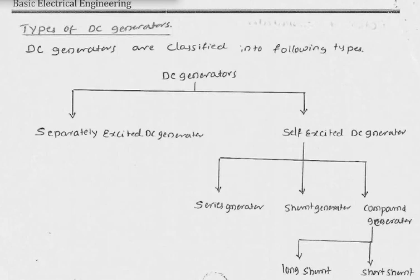There are different types of generators based on how the excitation of the generator is done. For a DC generator, we use the field winding. The field winding is used to create a magnetic field, and how that field winding is connected with the armature winding determines what type of generator we have.